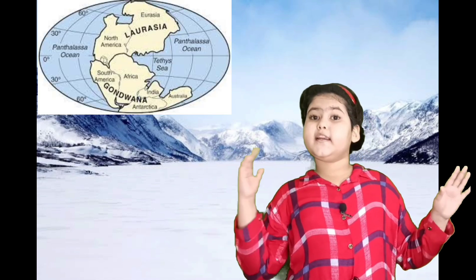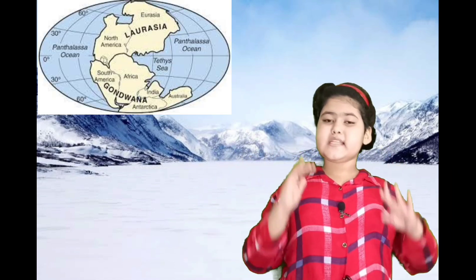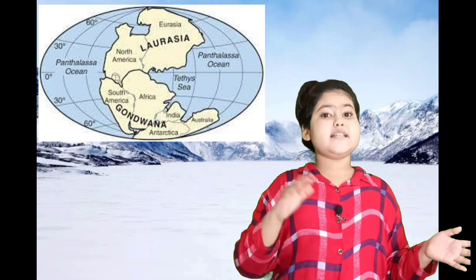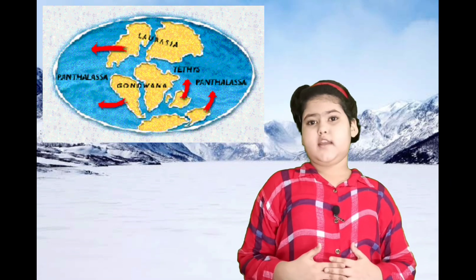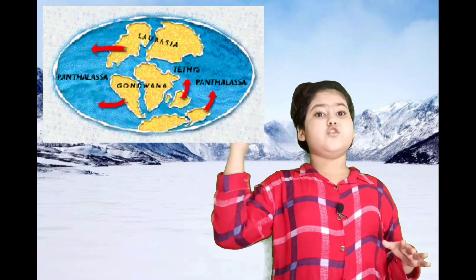Pangaea was divided into two parts: the northern part, known as Laurasia, and the southern part, known as Gondwana Land. Both the northern and southern parts split away due to the movement of plates, and all these plates started to drift in different directions.